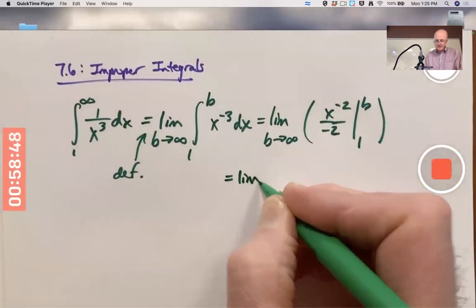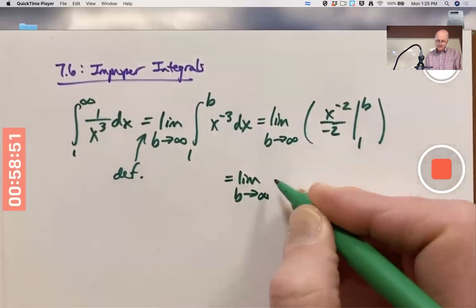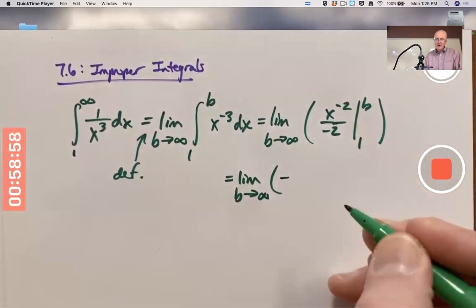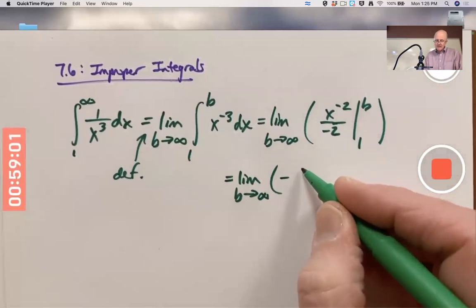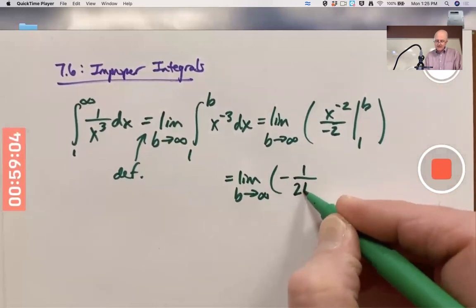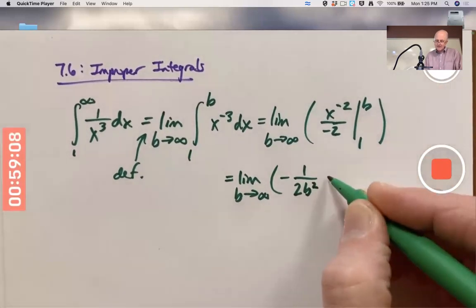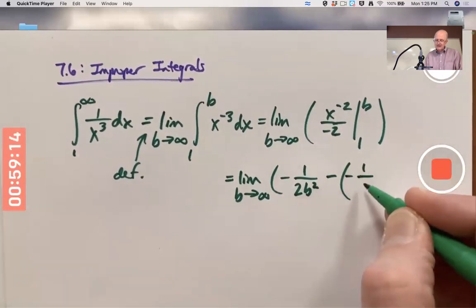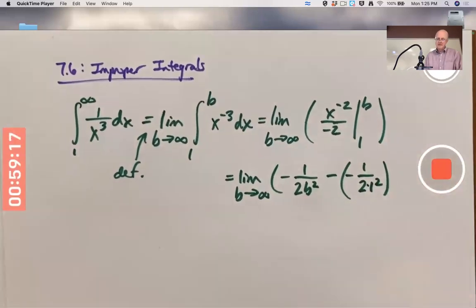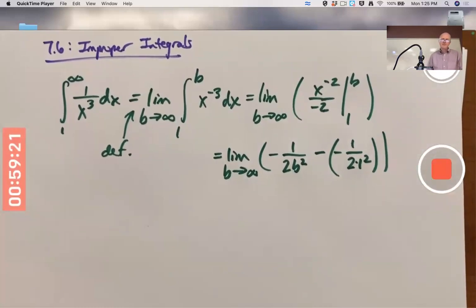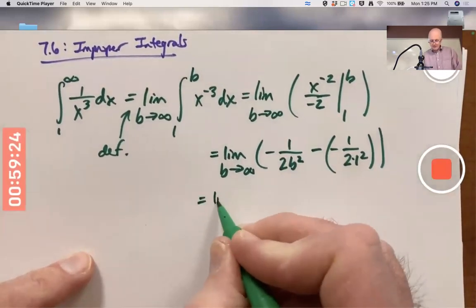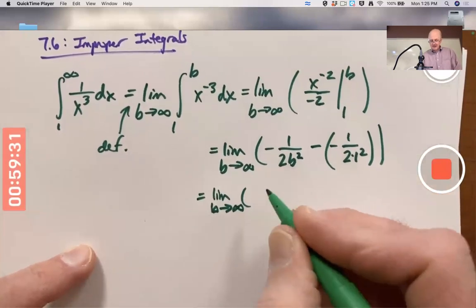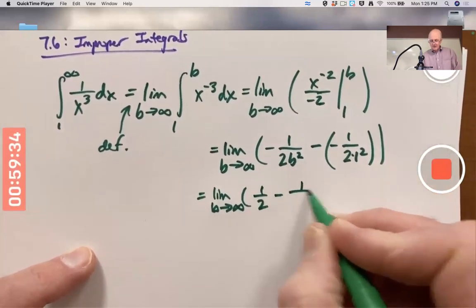Trickiest thing here is not to make a mistake with negative signs. First plug in b, and I think I'll bring the negative sign out in front. b to the negative 2 is the same as 1 divided by b to the positive 2, so I'll write this. Then I'm subtracting what I get when I plug in 1. Careful about minus signs. I have another minus sign here. And let's simplify a little bit before we take the limit. The two negative signs cancel. They'll give you a plus sign. I'm going to write this as plus 1 half minus 1 over 2b squared.